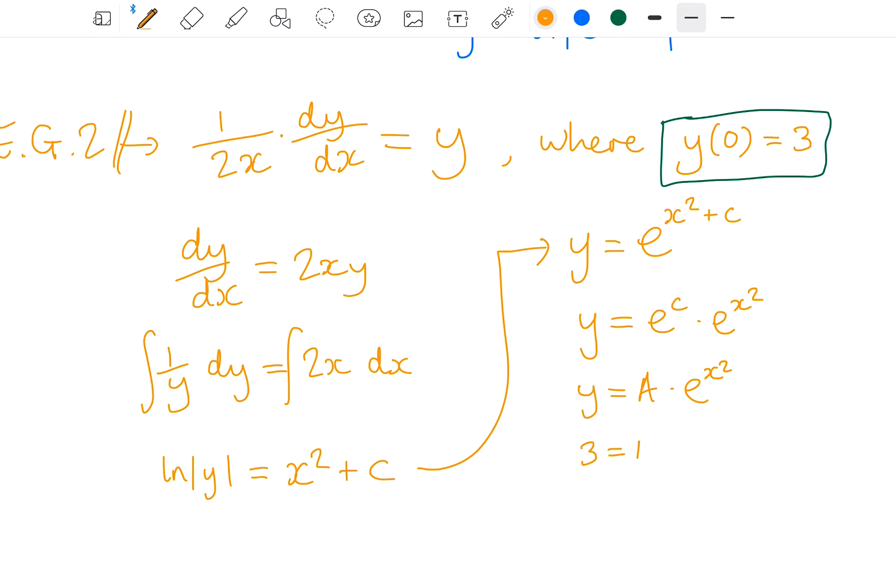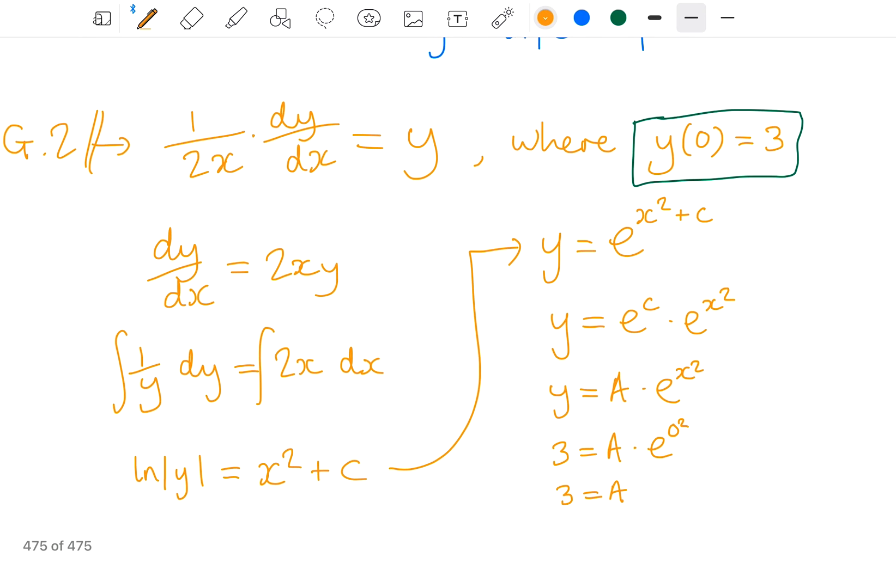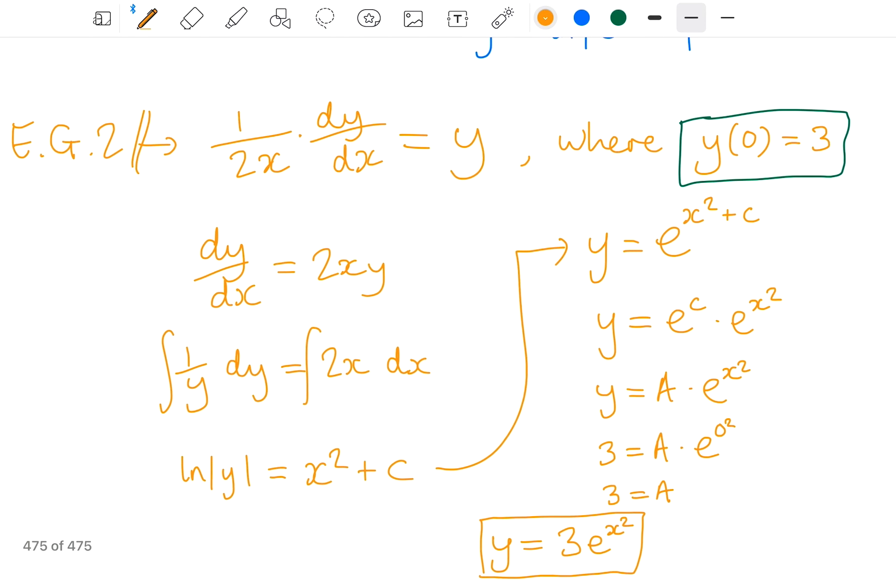So I plug in y is 3, and x as 0, 0 squared is 0, e to the power of 0 is 1. So therefore, a equals 3. And I can write out my final solution in full. Now I have a as 3. And there you have it. That is my solution to this differential equation.